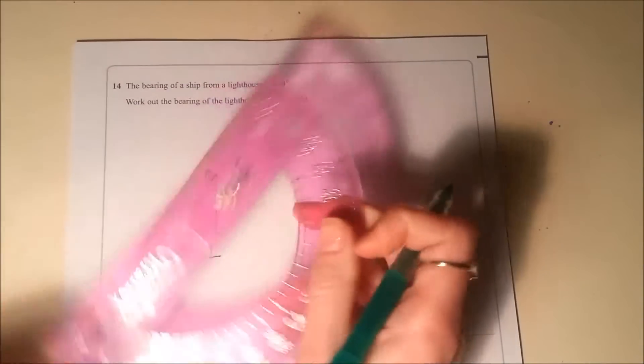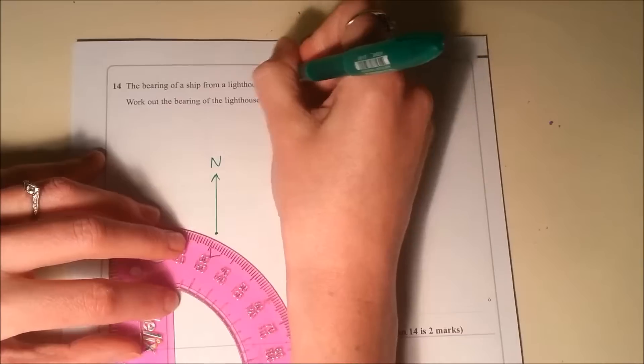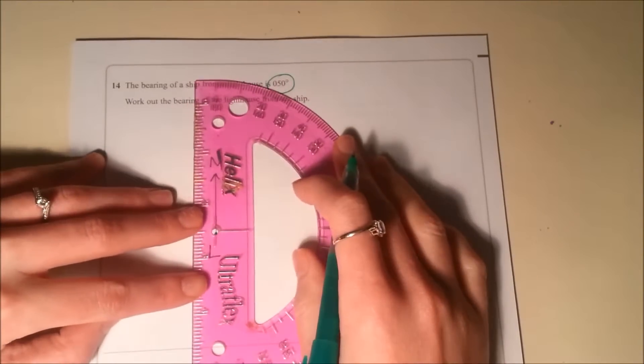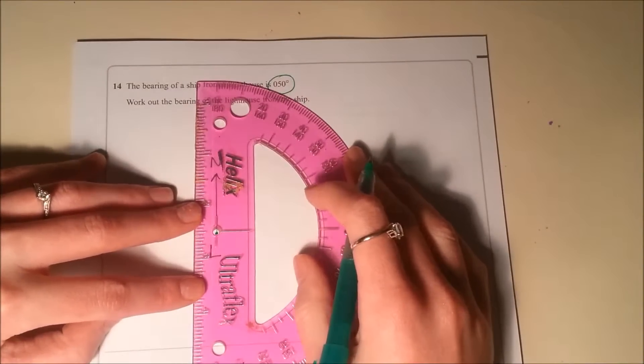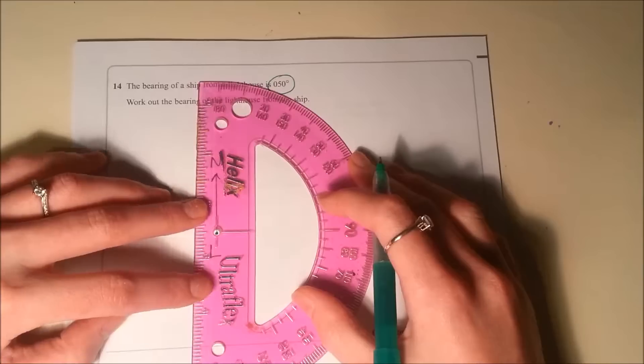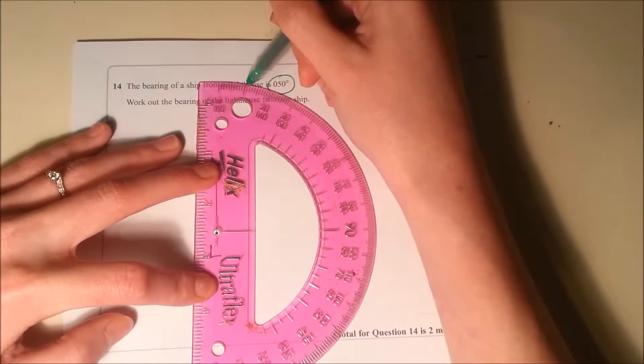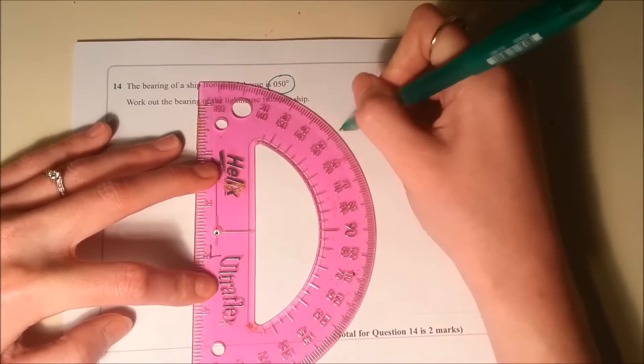If I start at the lighthouse looking north, and then I look at an angle of 50 degrees, I'm going to measure an angle of 50 degrees. 0, 10, 20, 30, 40, 50, it's over here.